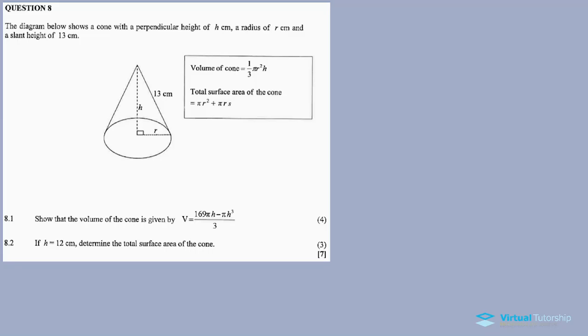So V is equal to 169 pi times H minus pi times H to exponent 3 divided by 3. An important thing to note in this equation is that we have H and pi. So therefore, if you have the formula for your volume, you need to express R in terms of H. Since we have R and H, we will express R in terms of H.